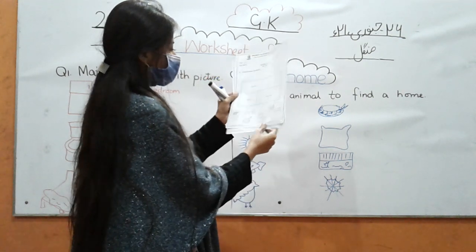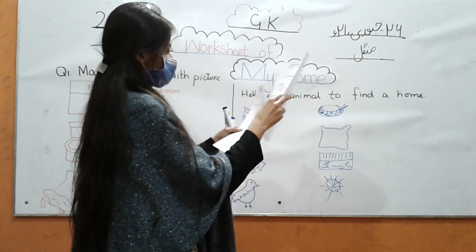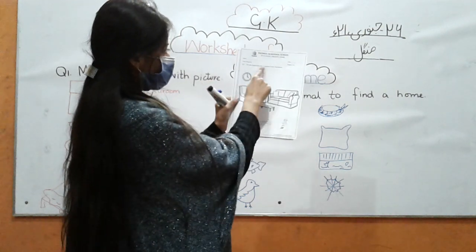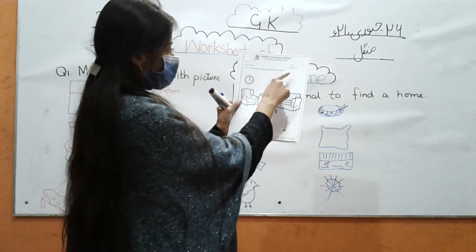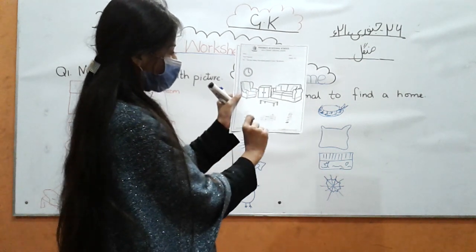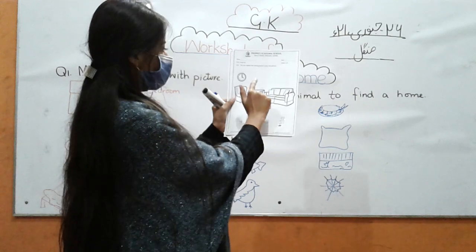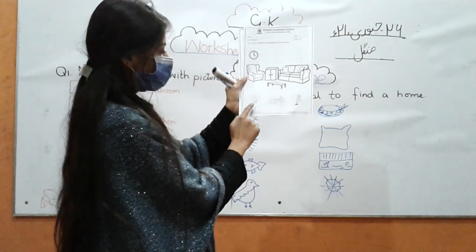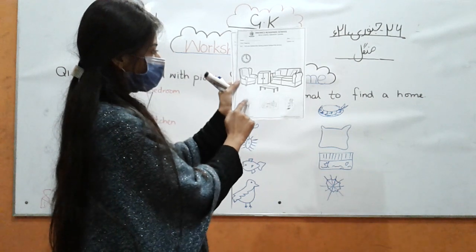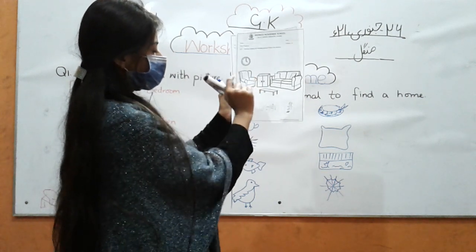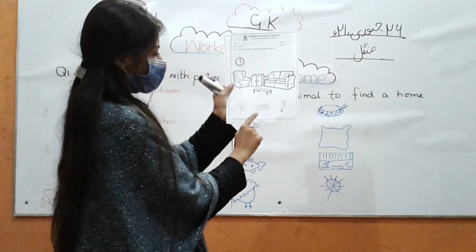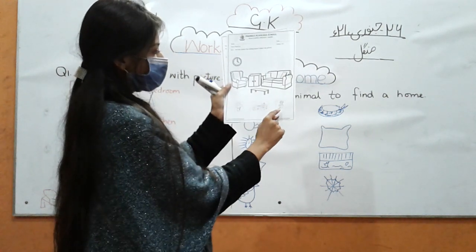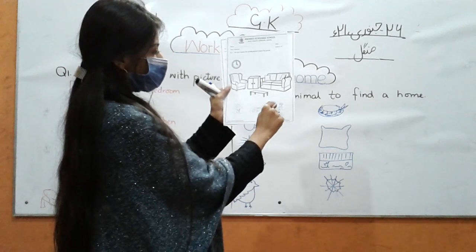In question number 3, color the picture and replace the missing pieces. Cut and paste the lamp and paste it in its right place. We have a lamp — you have to cut and paste it here.